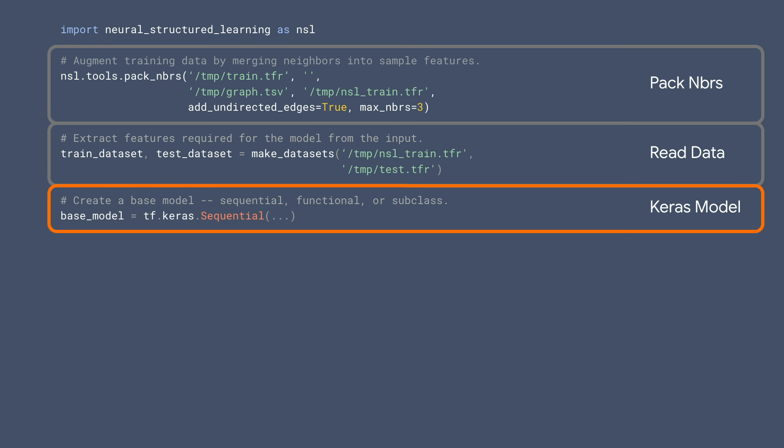The next step is to define a base model. In this example, we have used Keras for illustration, but Neural Structured Learning also supports the use of estimators. The base model can be any type of Keras model, whether it's a sequential model, a functional API-based model, or a subclass model. It can also have an arbitrary architecture.